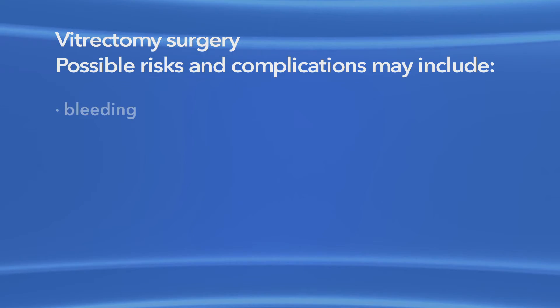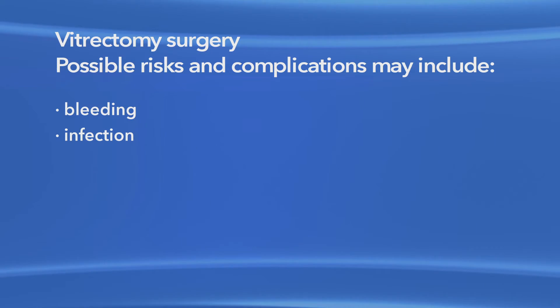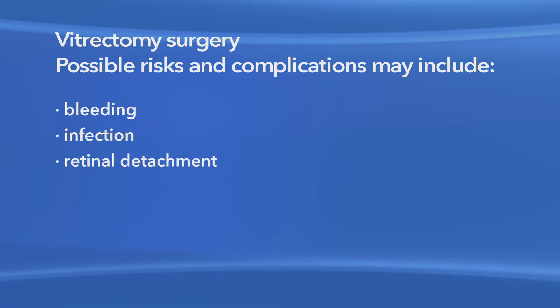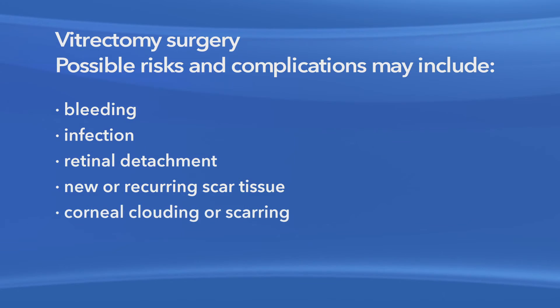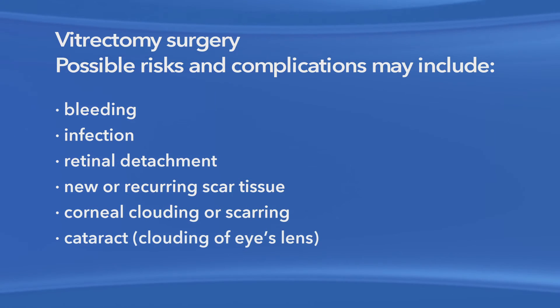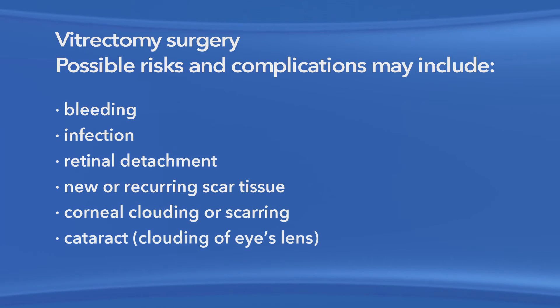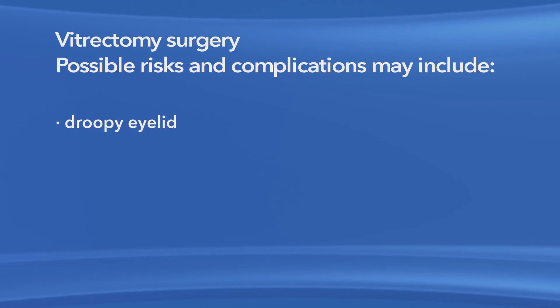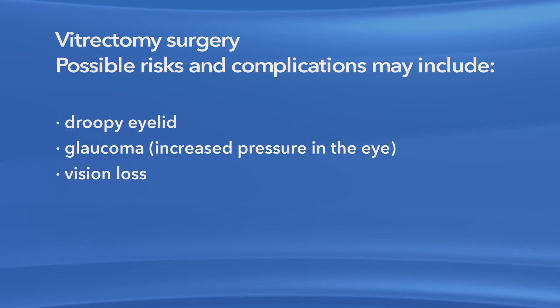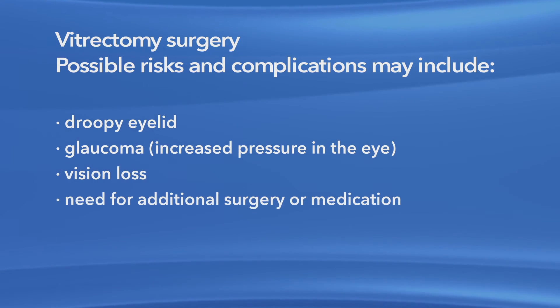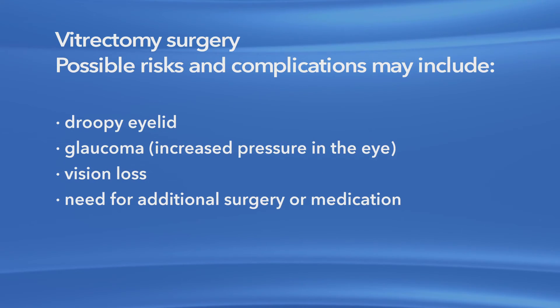As with any procedure, there are risks of side effects and complications with vitrectomy surgery to repair a macular pucker. These may include bleeding, eye infection, retinal detachment, new or recurring scar tissue inside the eye, clouding or scarring of the cornea, clouding of the lens of the eye or cataract, a droopy eyelid, increased pressure in the eye called glaucoma, vision loss, and the possible need for additional treatment, including medication and surgery.